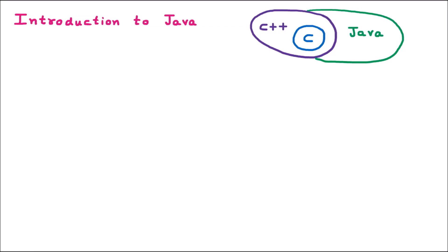Okay everyone, so now we are learning Java. Java was developed by Sun Microsystems in 1991. There were various people who developed Java, but there was a person named James Gosling who gave it the name Oak first. So originally the name of Java was Oak, which was given by James Gosling.